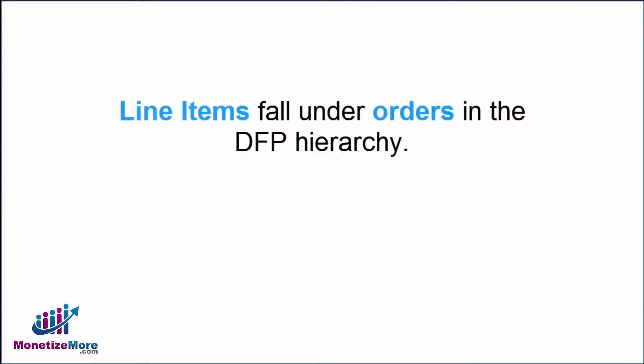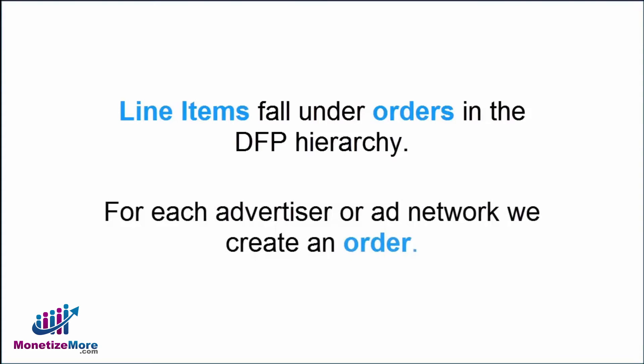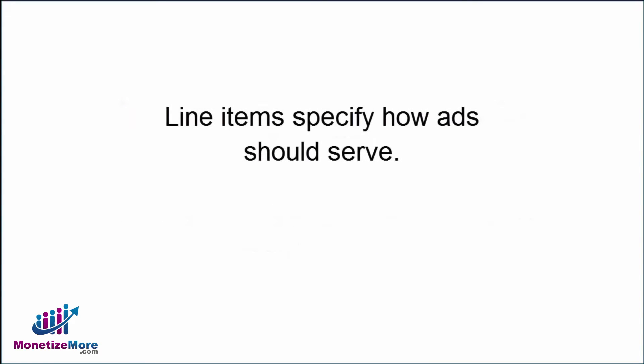Line items are the means through which we control how and where ads show within our inventory. Line items fall under orders in the DFP hierarchy. For each advertiser or ad network, we create an order. The line items under an order are a specific set of instructions on how ads should serve.